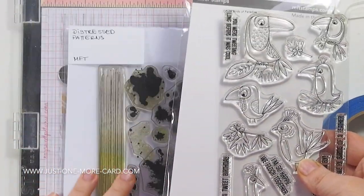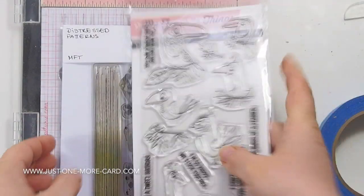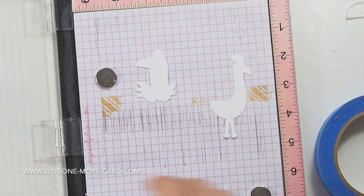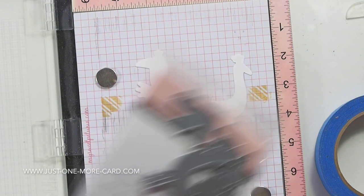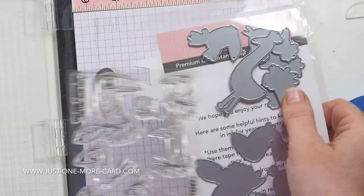I'm also going to be using the distress patterns which is also by My Favorite Things, and I used the corresponding dies. You can see that I've already die-cut the shapes before stamping, and that is because these dies are solid so you can't see through them, which makes it a little tricky to die-cut precisely around the stamped image.